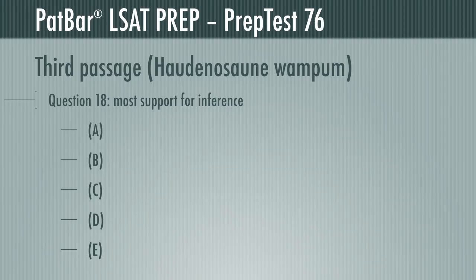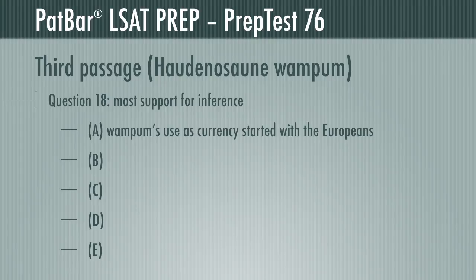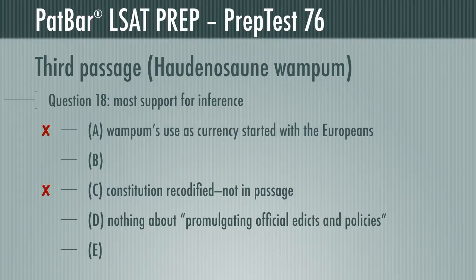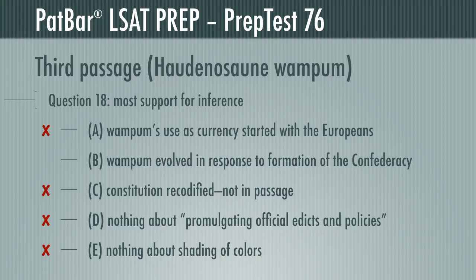Question 18 asks for the inference that has the most support from the passage. The passage says wampum as money started with arriving Europeans, so A is wrong. The passage says nothing about the constitution of the Confederacy needing to be recodified — C is wrong. The author says wampum belts recorded items of government business and made them available to the public, but nothing about promulgating edicts and policies, so D is incorrect. Subtler shadings in the colors of wampum beads? A passage cannot support what's not even implied — E is wrong. The start of paragraph 3, however, does directly support the inference that the evolution of wampum into belts was a direct response to the formation of the Haudenosaunee Confederacy. B is correct.